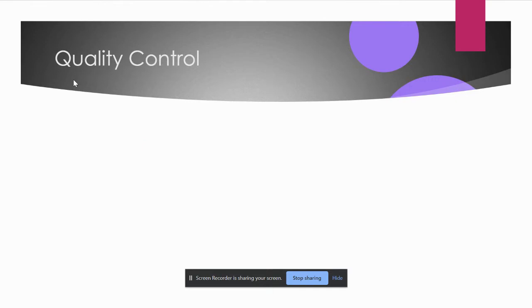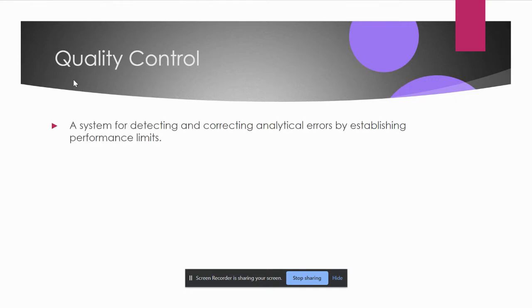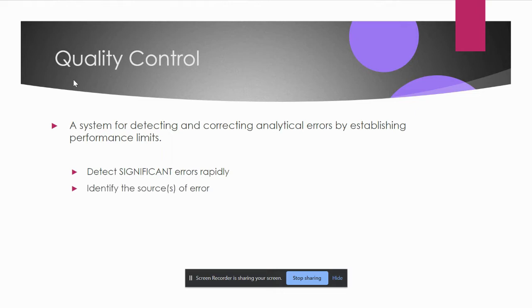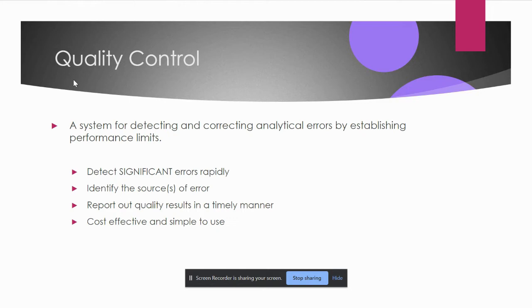There are a lot of definitions about quality control in the literature, but basically quality control is a system that detects and corrects analytical errors by establishing performance limits. The goal is to detect significant errors rapidly, identify the sources of error, and report quality results in a timely manner. Quality control should be cost-effective and simple to use — not expensive or complex.